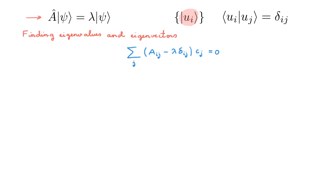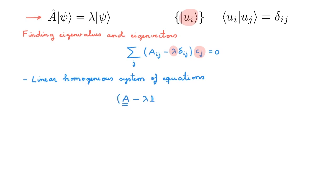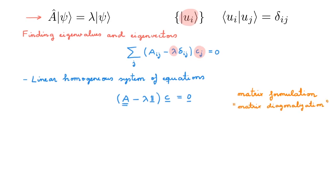So finding the eigenvalues and eigenvectors now becomes finding the lambda and c in this equation. What we have is a linear and homogeneous system of equations for the unknowns lambda and c. We can also view this as a matrix equation where A and the identity are the matrices associated with the operators A and 1, and c is the column vector associated with the eigenstate. In quantum mechanics we call this the matrix formulation of the theory. In this language, finding the eigenvalues and eigenvectors becomes a mathematical exercise called matrix diagonalization, and I have linked external references in the description if you want a more in-depth refresher.